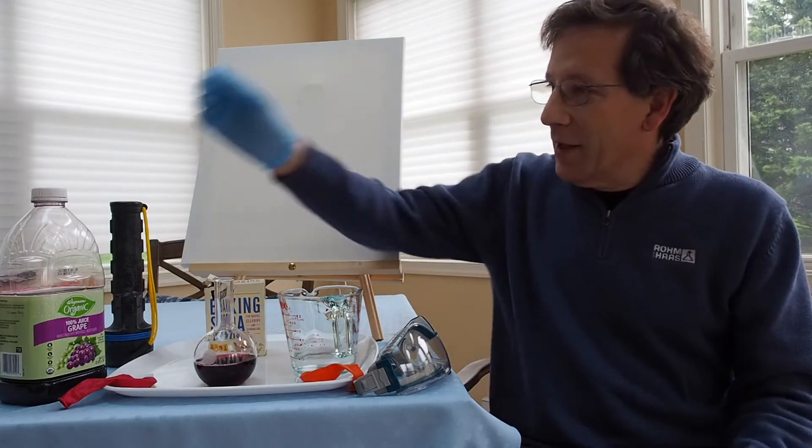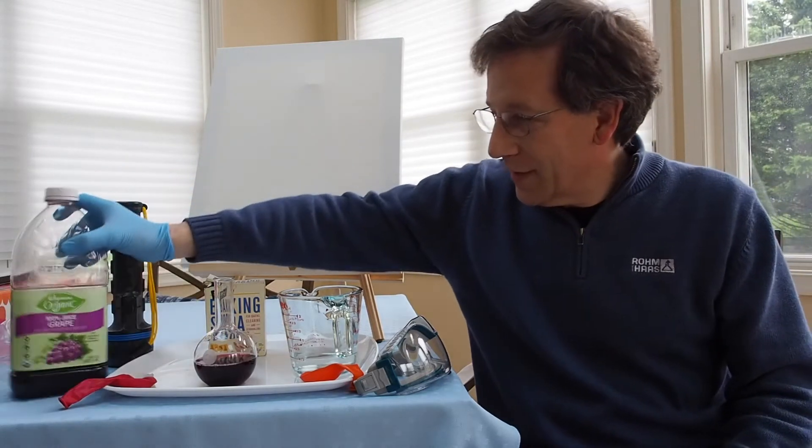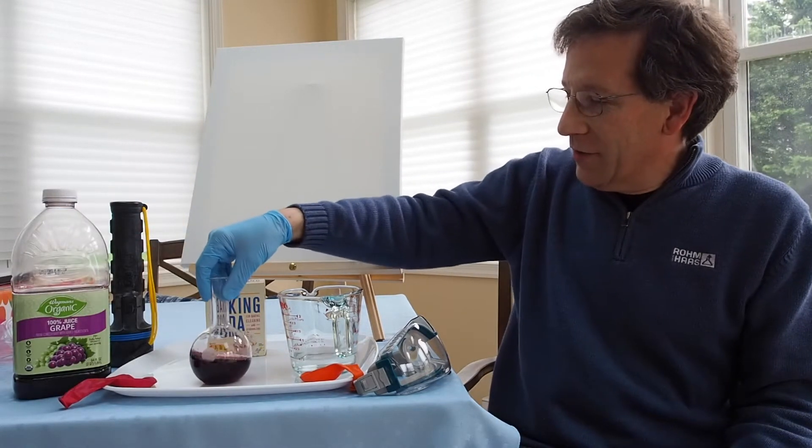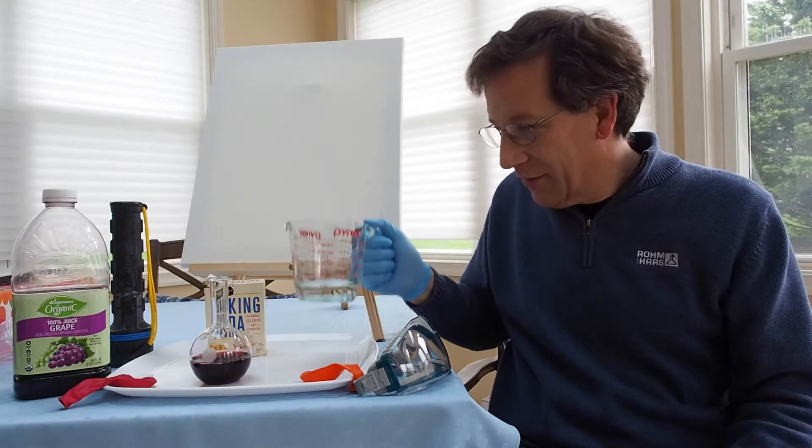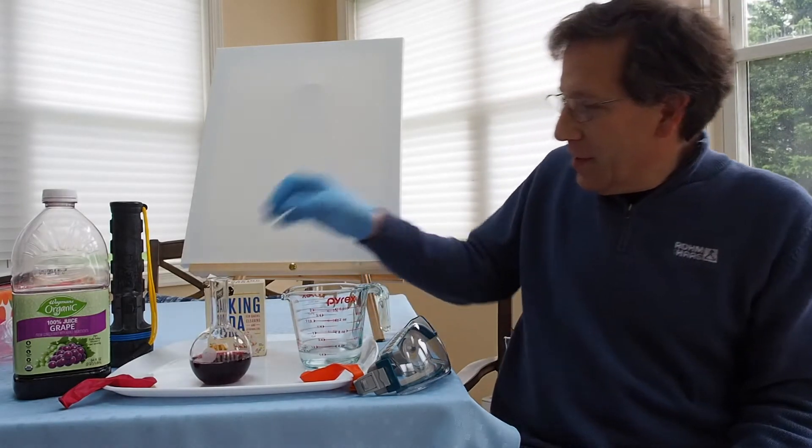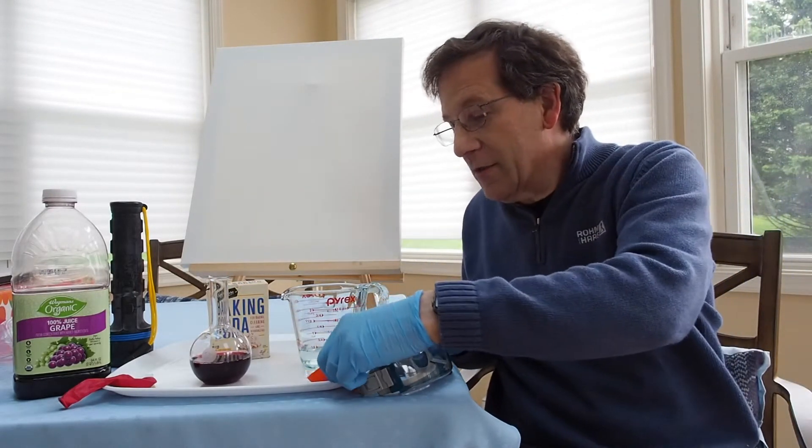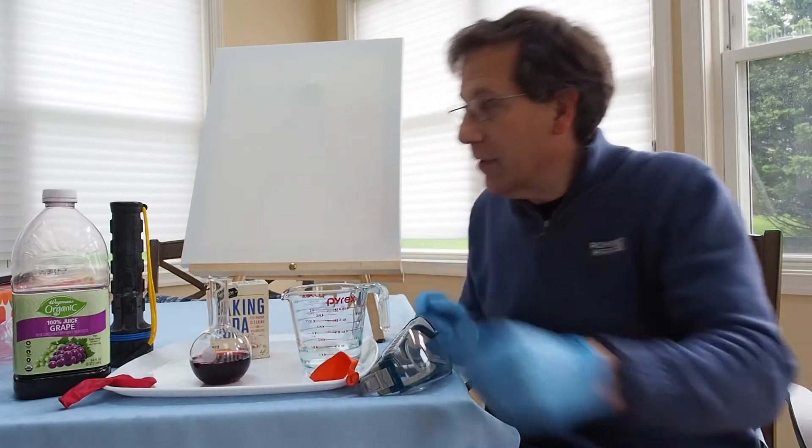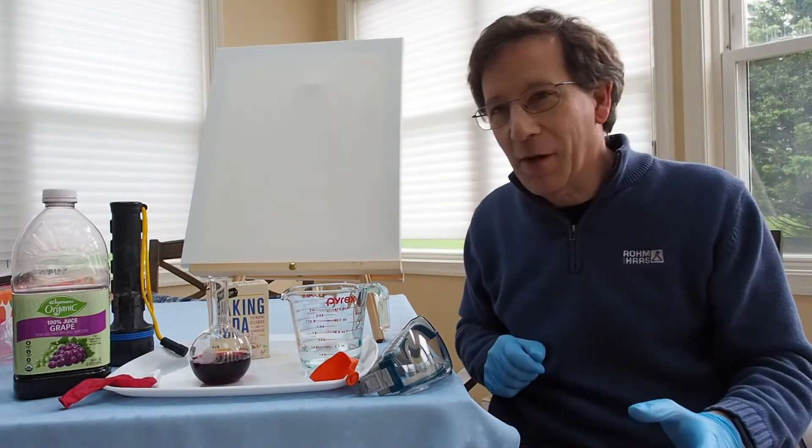The acids are going to be grape juice, which you see here in this flask, vinegar which is in this cup here, baking soda, and then some balloons and a flashlight. You're going to see how all this comes together.